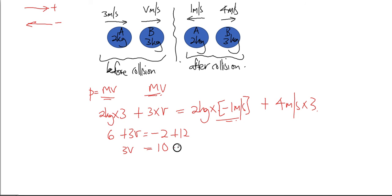3v equals 10 minus 6, so 3v equals 4, so v equals 4 over 3 meters per second.